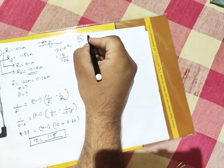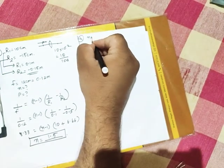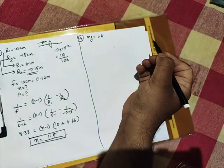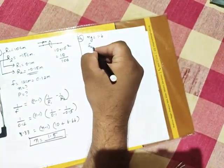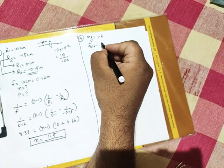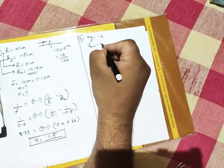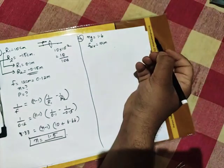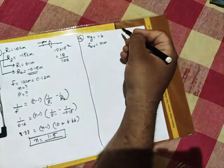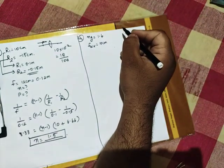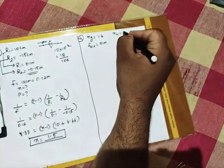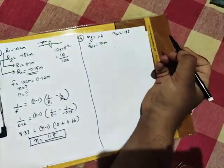A glass lens of refractive index 1.6 has a focal length 10 cm in air. Refractive index of glass is 1.6. Focal length in air, if you have a glass lens in air, then the focal length is 10 cm, that means 0.1 meter.